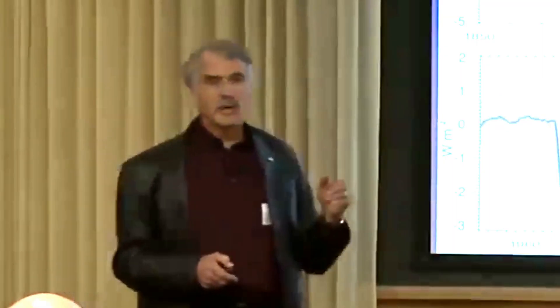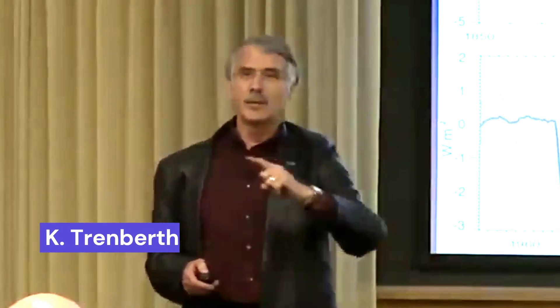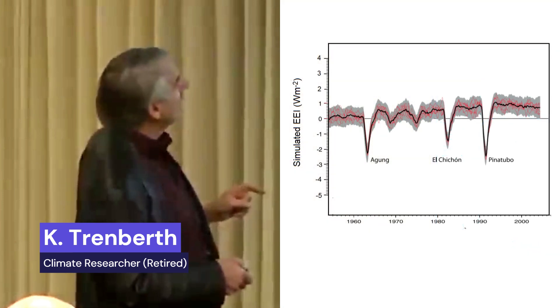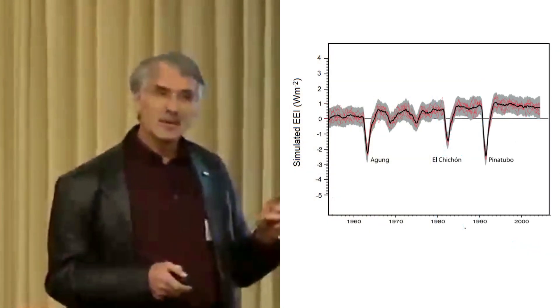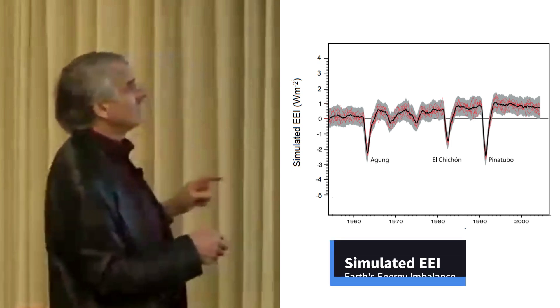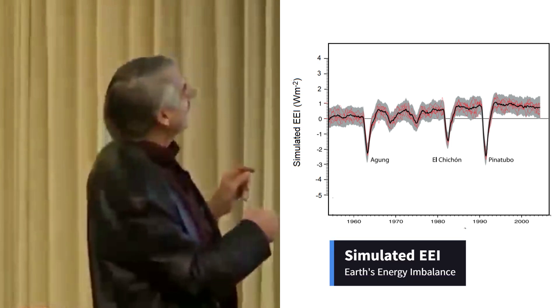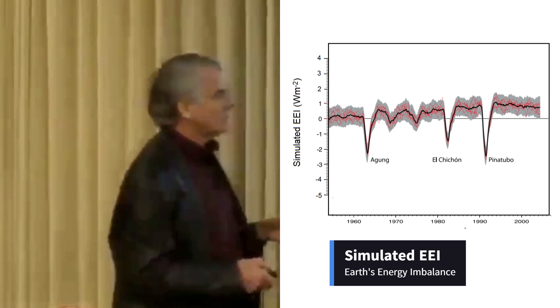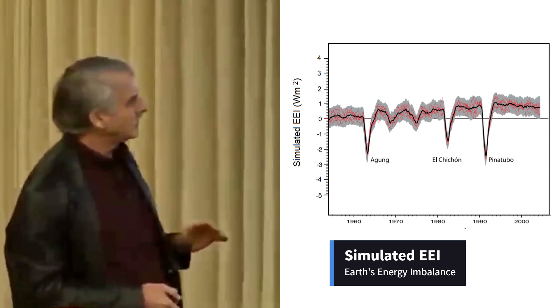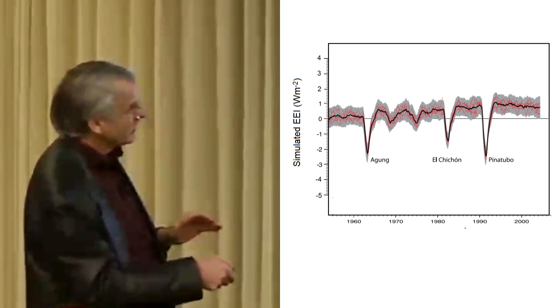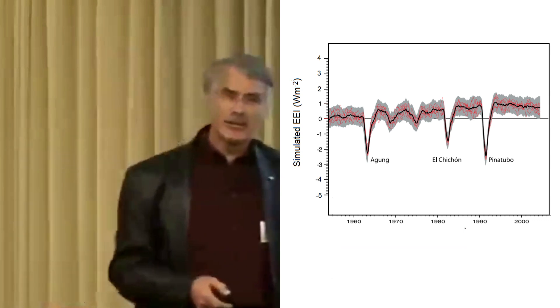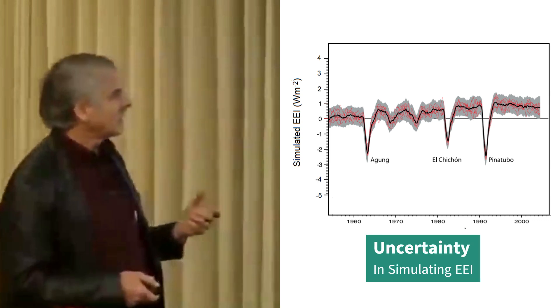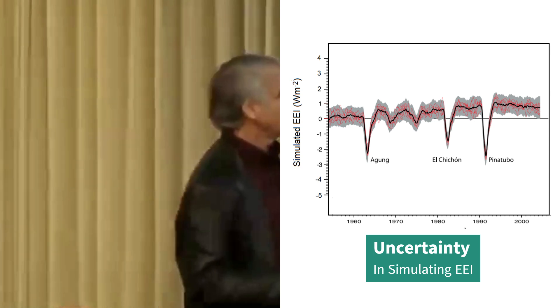Looking at one method now, looking at CCSM4, which was commented before is actually a pretty good model. And here we've run the model eight times. Notice, since EEI cannot be measured reliably, the EEI he used was computer-simulated. You can see the fluctuations in here. This is natural variability that is occurring within this model from one run to the next. The El Niños occur at different times.